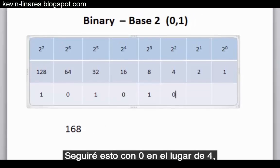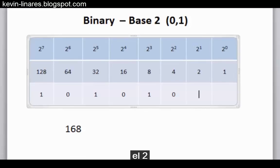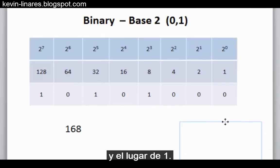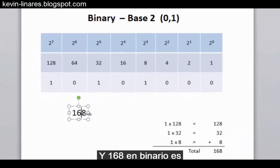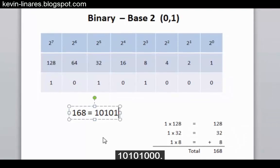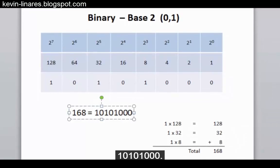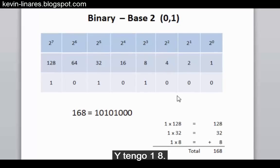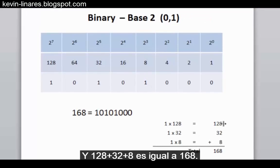I'll follow this up with 0's in the 4's place, the 2's place, and the 1's place. 168 in binary equals 10101000. I now have 1, 128, I have 1, 32, and I have 1, 8. And 128 plus 32 plus 8 equals 168.